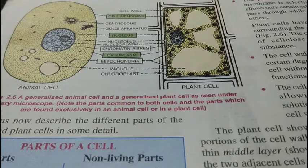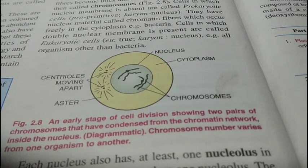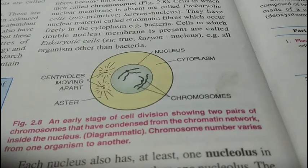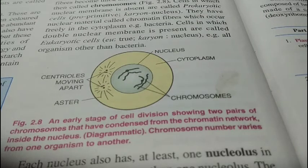The endoplasmic reticulum acts as the support framework of the cell and helps in the transport of substances from one part of the cell to another. There are also certain non-living substances found in the cell, like starch granules, glycogen granules, and fats. These non-living substances are stored in the vacuoles, which act as the storage house of the cell.